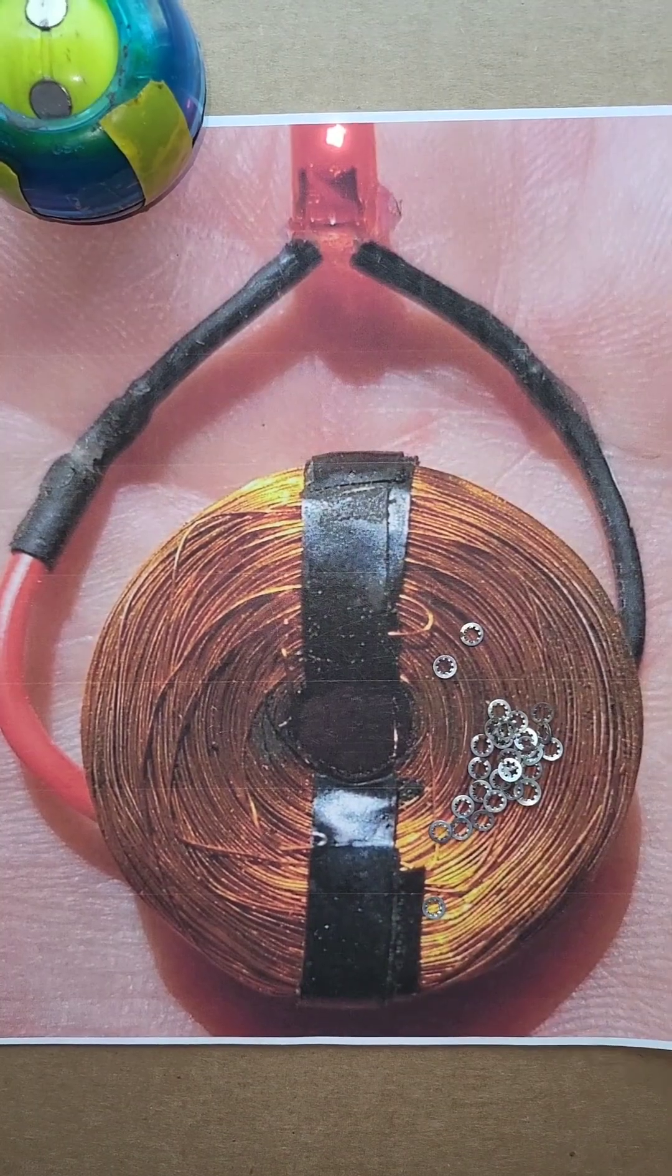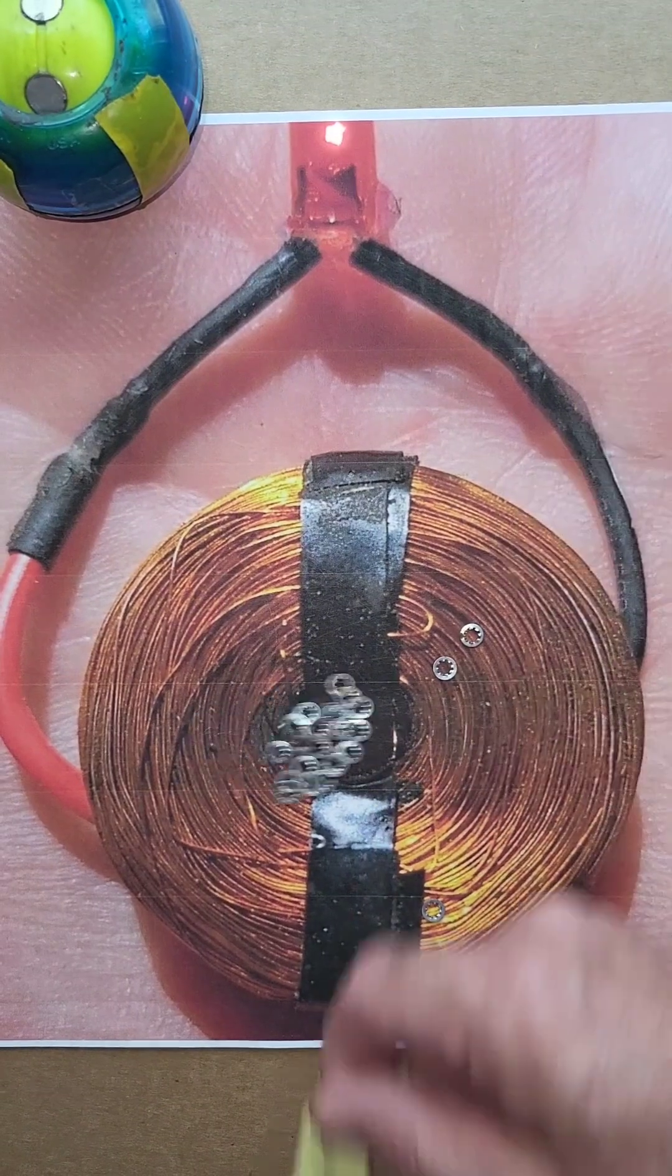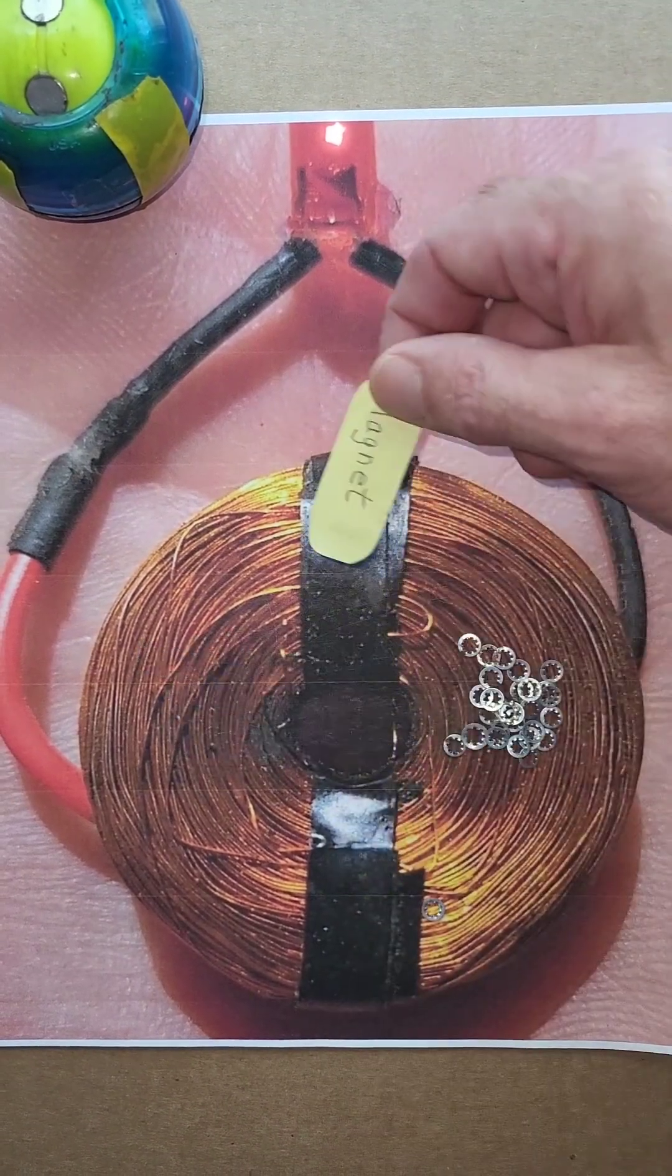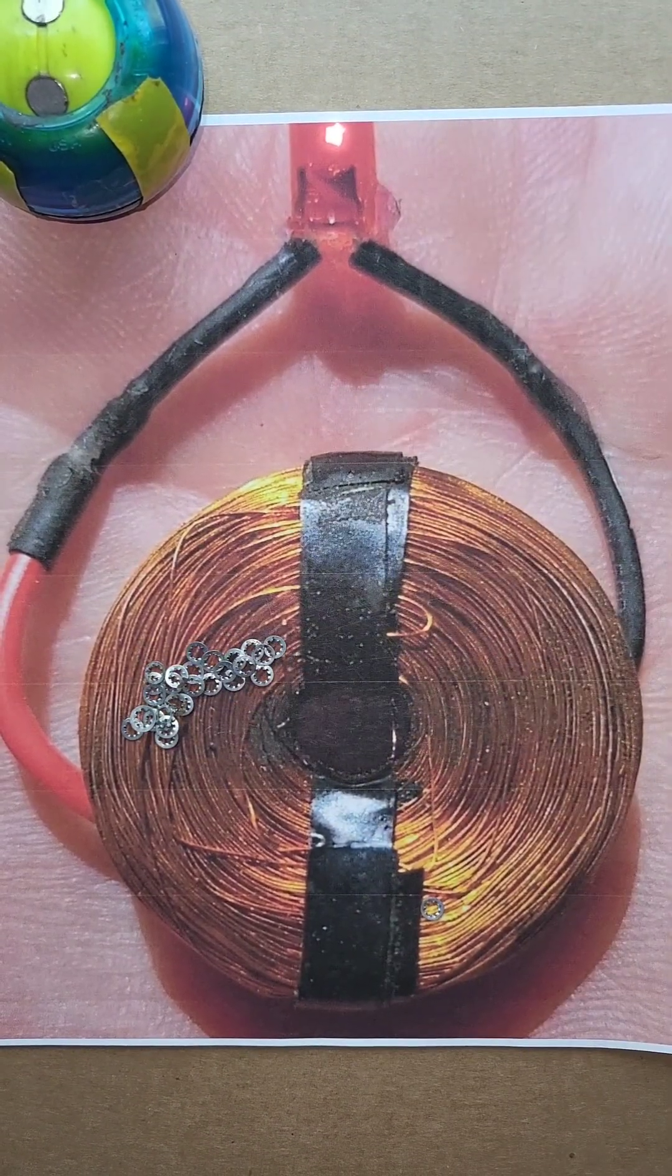This oscillation of electrons going back and forth in the coil is alternating current.